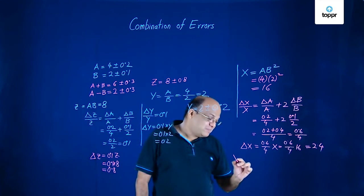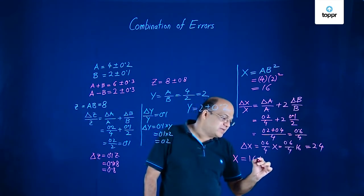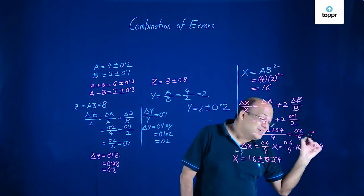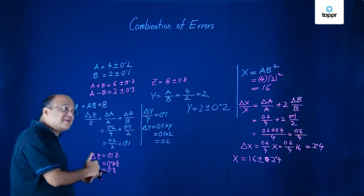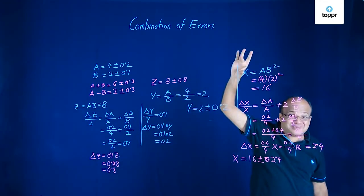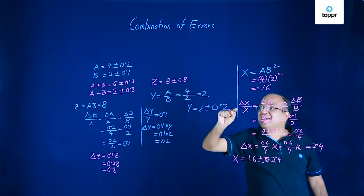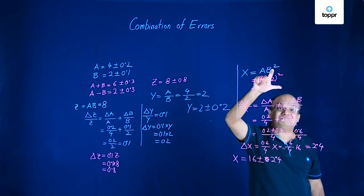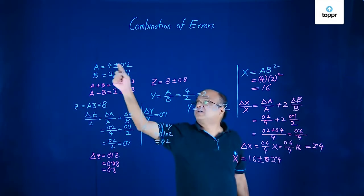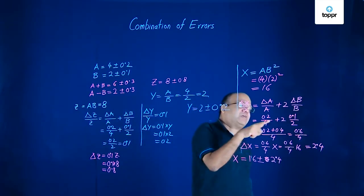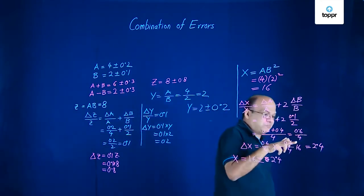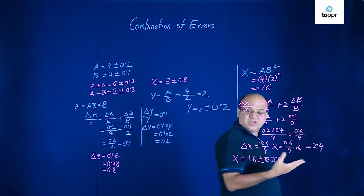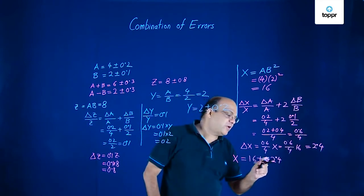Therefore, X becomes 16 plus minus, not 0, it is 2.4. So this is how you solve this question. Pay attention here. X became AB square now. So that became 16. That is no problem. Error in X by X equal to error in A by A plus 2 times error in B by B. Why 2? Because this power is 2. So 0.2 by 4 here. 0.1 by 2 multiplied by 2. That is actually 0.1. But you have taken 4 as LCM. So you get 0.4 there. So 0.6 by 4. So delta X becomes 0.6 by 4 into 16 because 16 is the value of AB square. So you get 4 here. 2.4. So X is 16 plus minus 2.4. Easy.